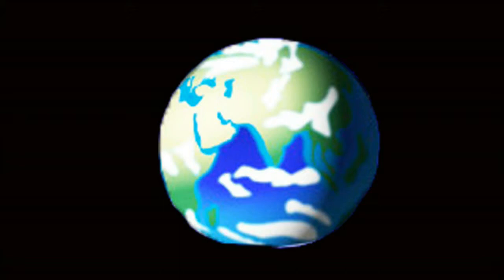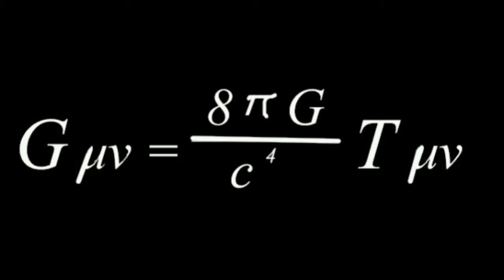General relativity was Einstein's endeavor to understand the relationship between inertial and gravitational mass, acceleration, and how it all relates to space and time. The theory can be written as a single mathematical equation that, among other things, describes how planets orbit.